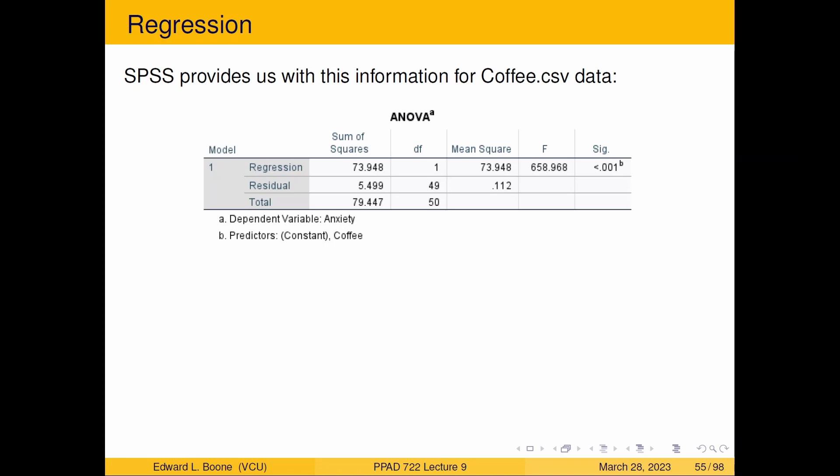And what we would say is that based on this, we are pretty sure that there is some variable in the model that is useful. And there, in this case, there's only one variable in the model, which is coffee. So coffee is useful, statistically significantly related to Y, through the linear regression.